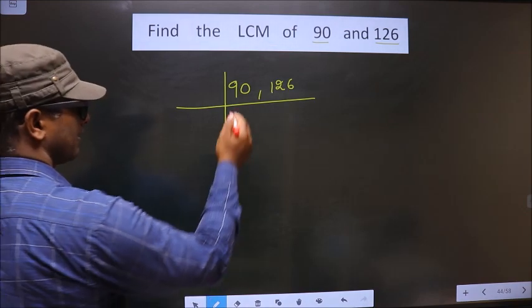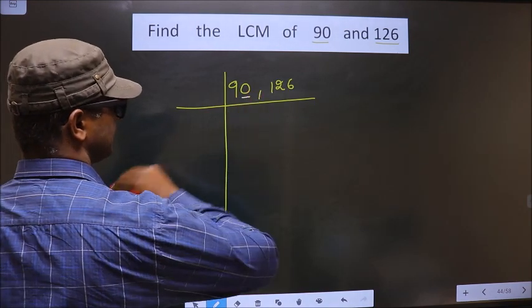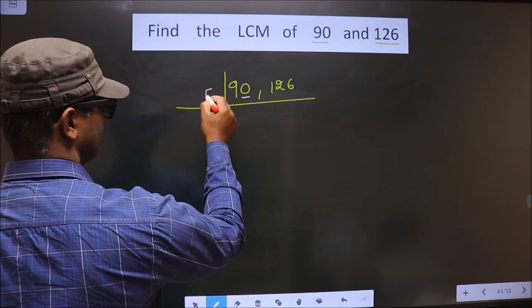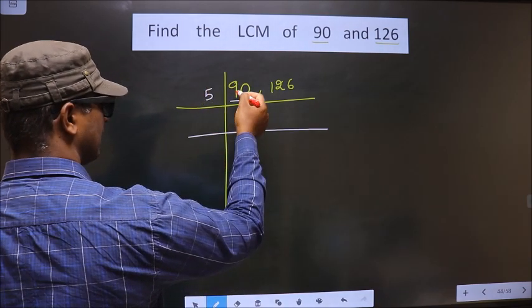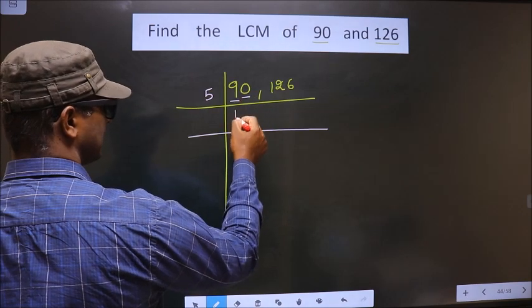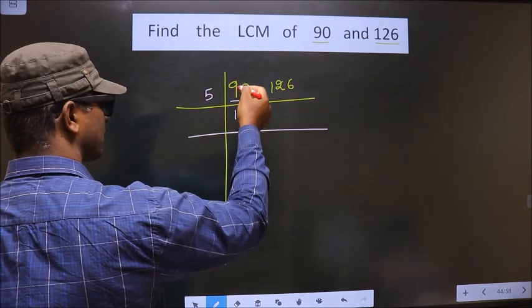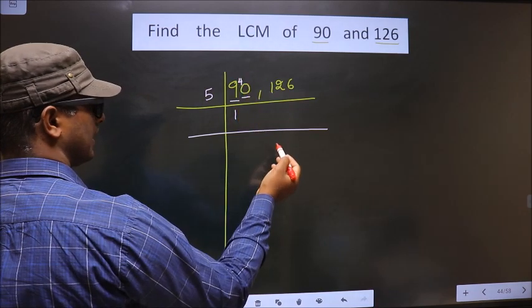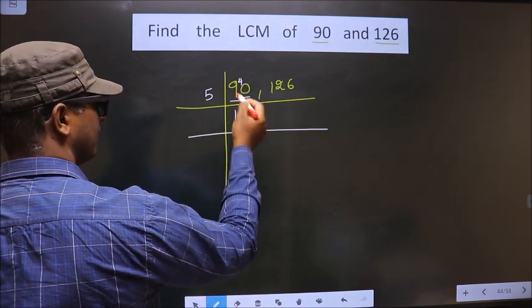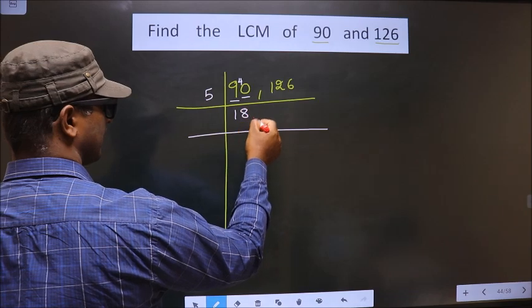Next. For this number, last digit is 0, so we take 5 here. Now, first number is 9. A number close to 9 in 5 table is 5 once 5. 9 minus 5 is 4. 4 carried forward making it 40. When do we get 40 in 5 table? 5 times 8 is 40.